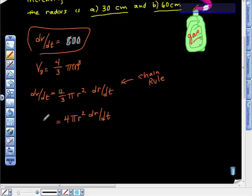And dV/dt is 800, so I'm just going to replace dV/dt with frankly dV/dt. So far so good, I hope.